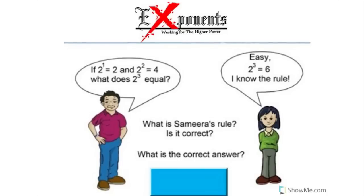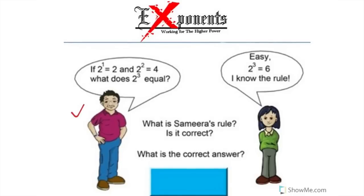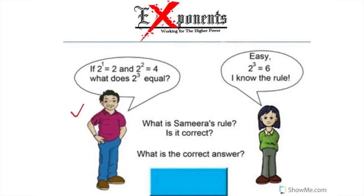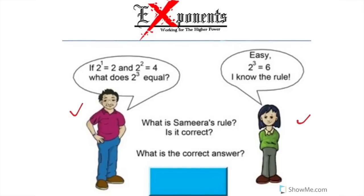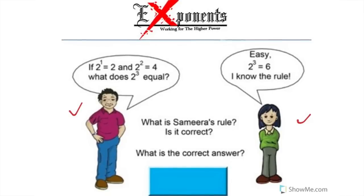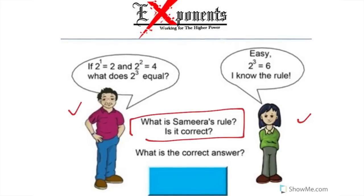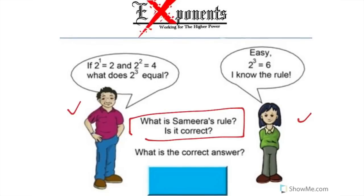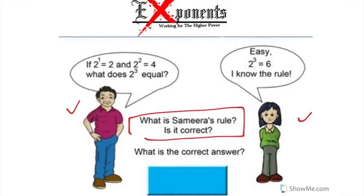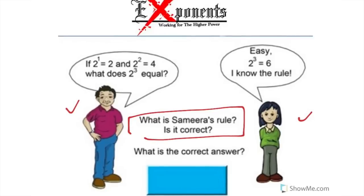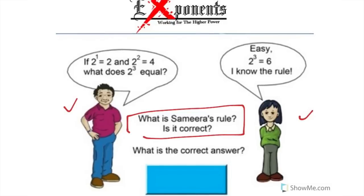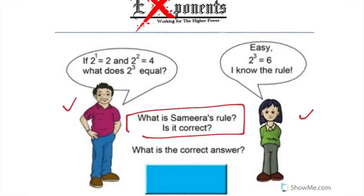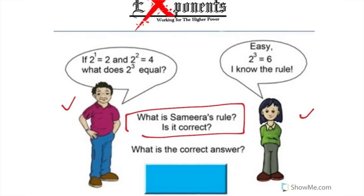Here I've provided another cartoon. The question on screen: if two to the first power equals two and two to the second power equals four, what does two to the third power equal? The girl says: "Easy — two to the third power equals six. I know the rule." The question asks: what is Samira's rule, and is it correct? Give it a shot based on what you just learned. Pause the video, find the correct answer, and insert it.